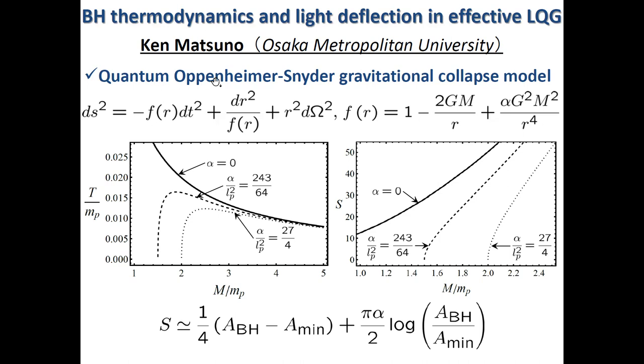Recently, the Quantum Oppenheimer-Snyder Gravitational Collapse Model is constructed in Loop Quantum Gravity. The exterior metric of the collapsing dust sphere represents quantum corrected Schwarzschild spacetime with this term.